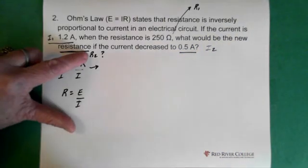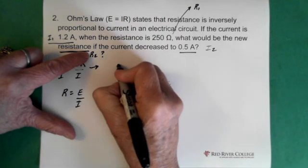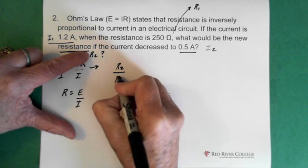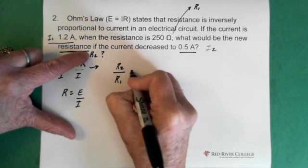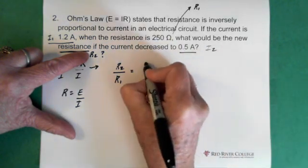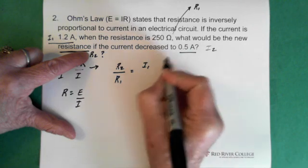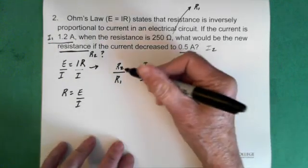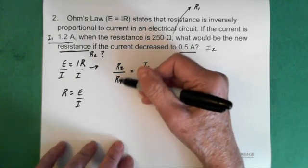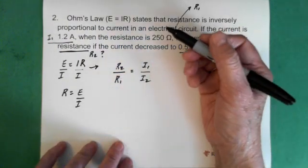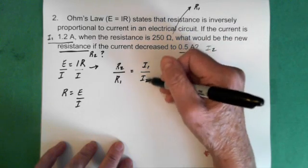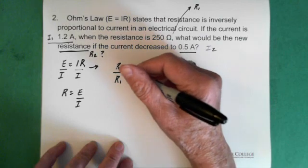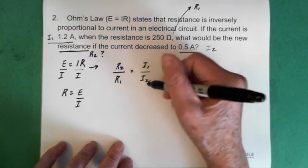So we're looking for resistance 2. So we can set this up as R2 over R1 equals I1 over I2. All right. So here the units would be the same. They'd be ohms. Here the units would be the same. They'd be current. And there's an inverse relationship.